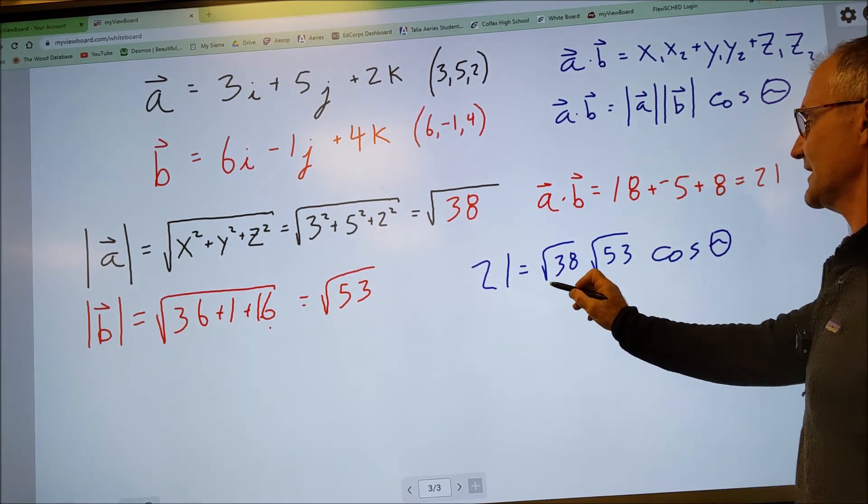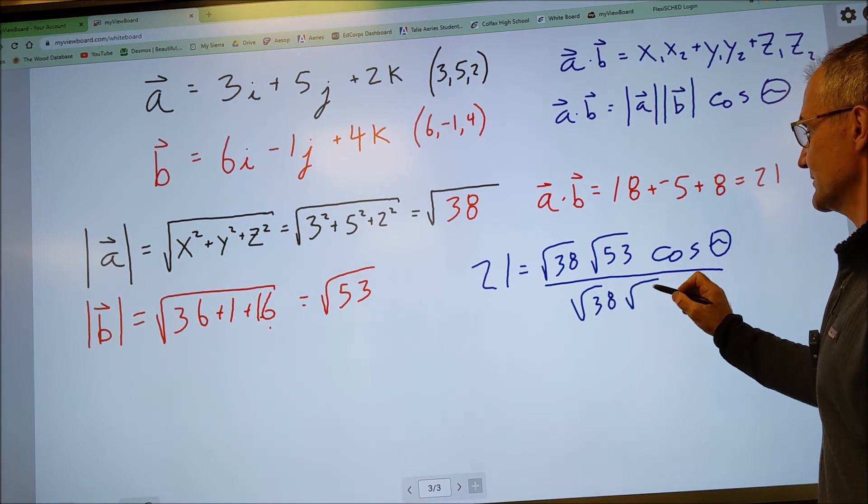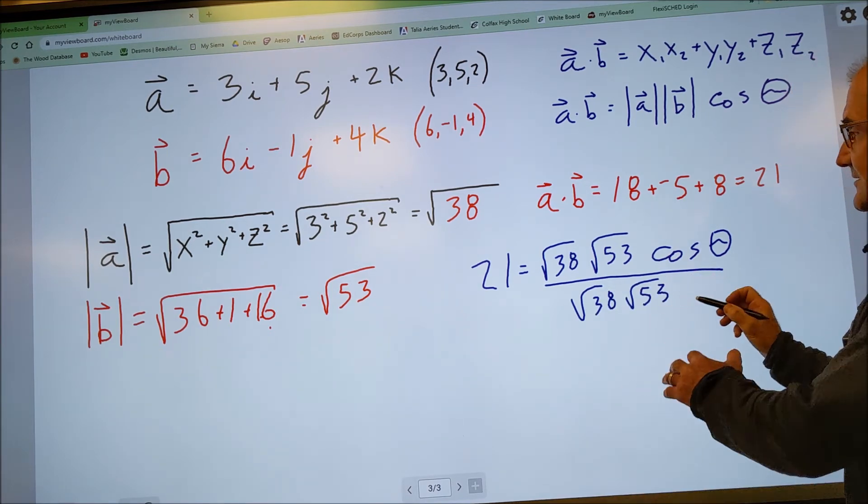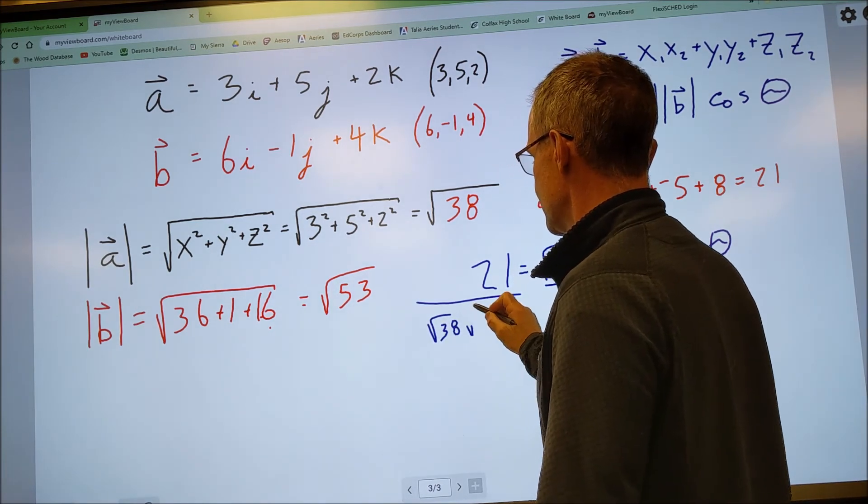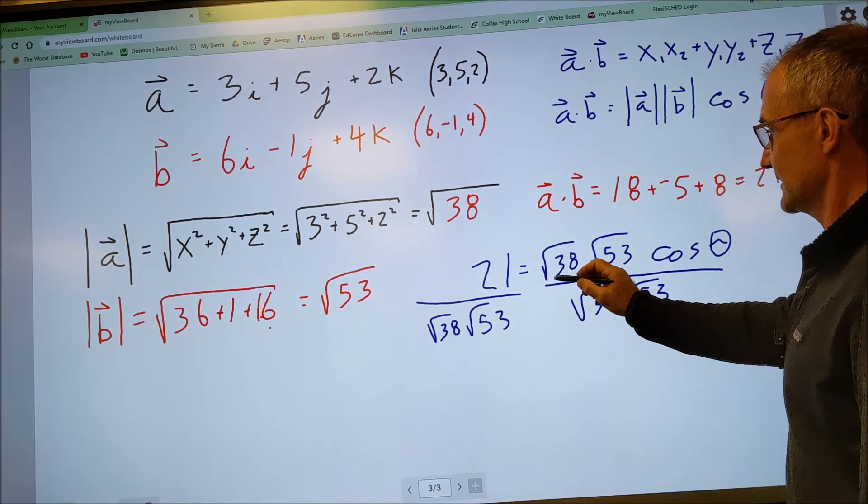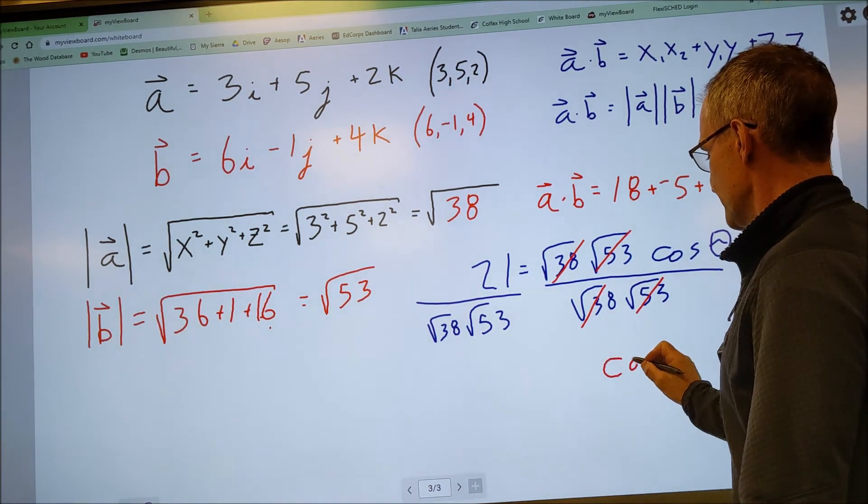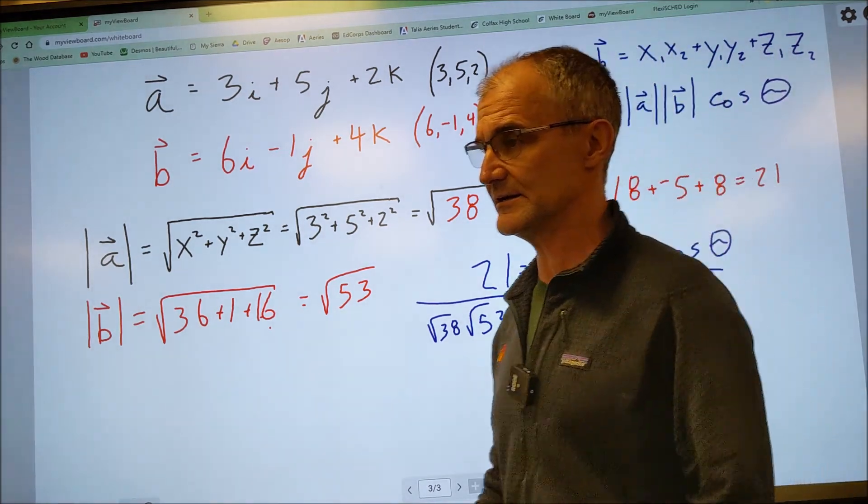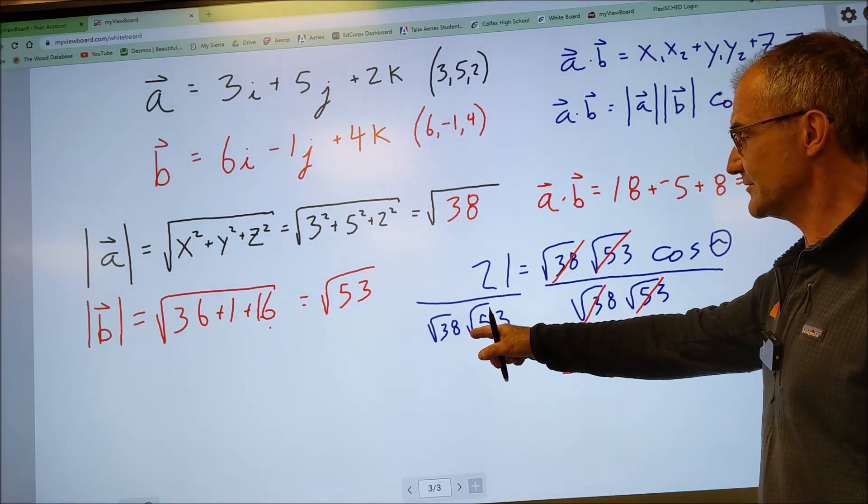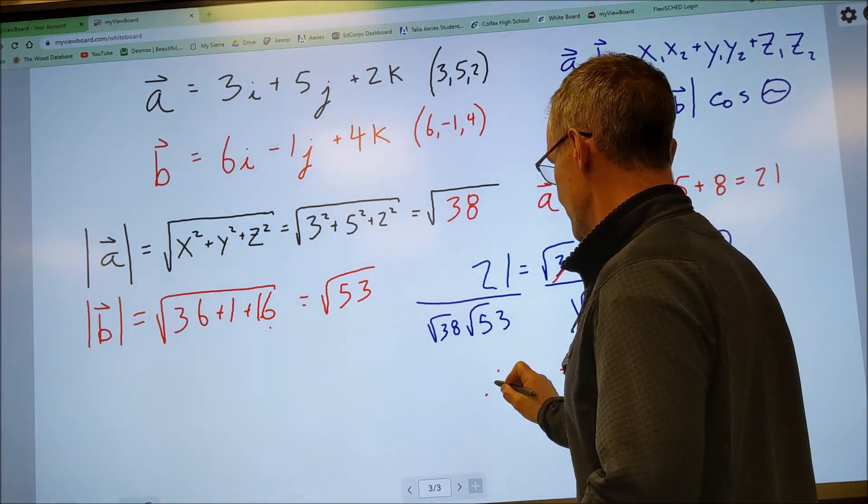The way I'll do that is I'll divide both sides by the square root of 38 and the square root of 53. Do that to the right. I'll also do it to the left. Square root of 38, square root of 53. That'll cancel with that. That with that. Cosine of theta will be equal to this number right here. So I do 21 divided by root 38 and root 53. That gives me 0.467.